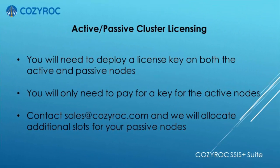If you have clusters with active and passive nodes, you're probably wondering how the licensing works for that situation. You'll need to deploy a license key on both the active and the passive nodes. However, you're only going to need to pay for a key for the active nodes. You'll need to contact CozyRock — I suggest using sales@CozyRock.com — and we'll allocate additional slots for your passive nodes.